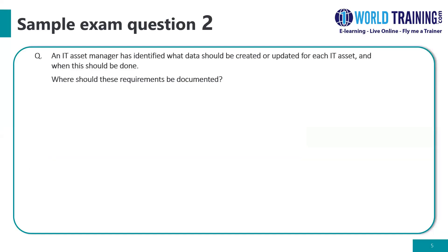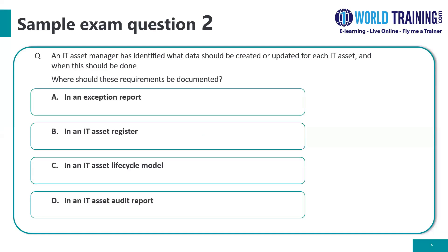Question number two. An IT asset manager has identified what data should be created or updated for each IT asset and when they should be done. Where should these requirements be documented? A: In an exception report. B: In an IT asset register. C: In an IT asset lifecycle model. D: In the IT asset audit report.